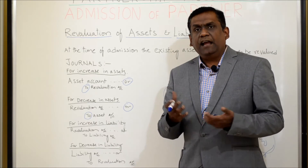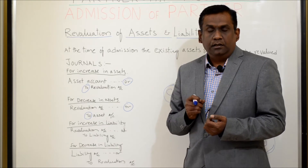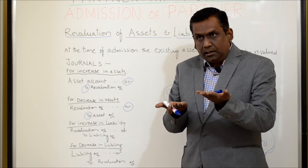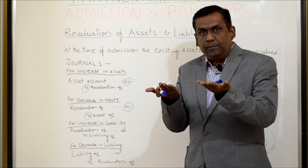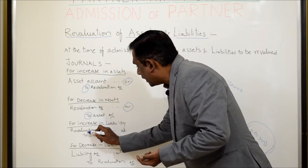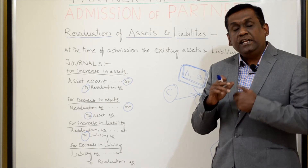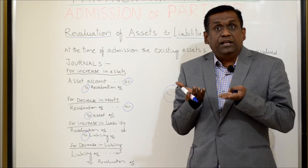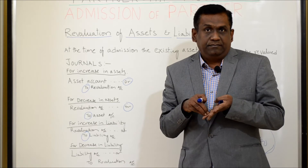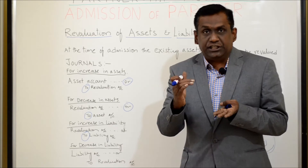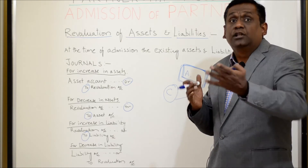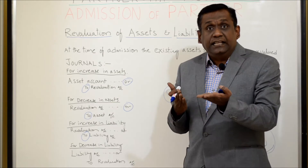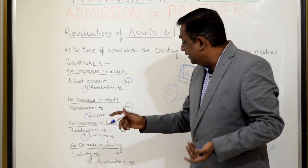Increase in liability. My liability is increased. Liability is a credit balance. The credit balance is supposed to be increasing now, so if you want to increase the credit balance, you have to again credit it. That is the reason we credit the liability again. Why do I debit revaluation here? When there is an increase in liability, that is a loss for me. The liability would have increased because of additional expenditure, and that additional expenditure has to go to the revaluation account. So expenses and losses are debited in revaluation as per nominal account principle — liability increase is additional expenditure, hence revaluation account is debited.